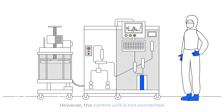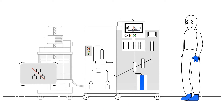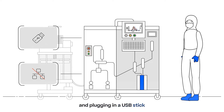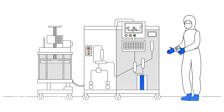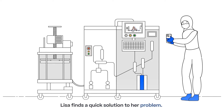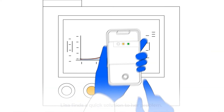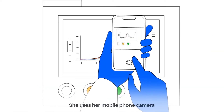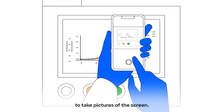However, the control unit is not connected to any network and plugging in a USB stick isn't an option either. Lisa finds a quick solution to her problem: she uses her mobile phone camera to take pictures of the screen.